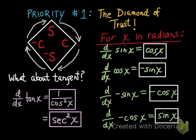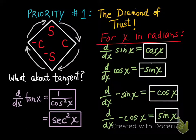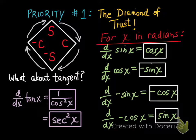On the AP exam multiple choice, you might see the tangent derivative written either way, so be prepared for that. Here come four examples utilizing derivatives of trig functions combined with the chain rule — these are the problems you'll most often see in the upcoming homework.